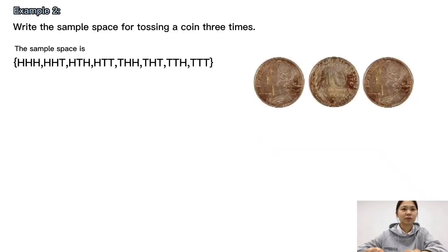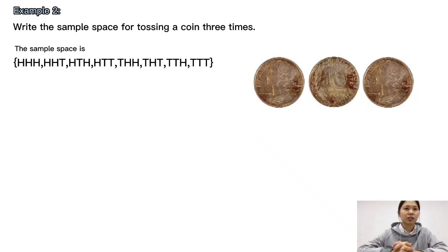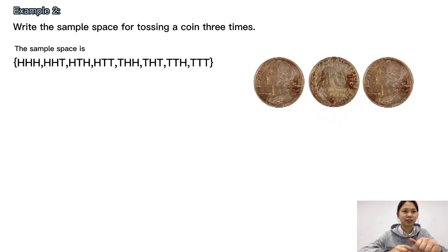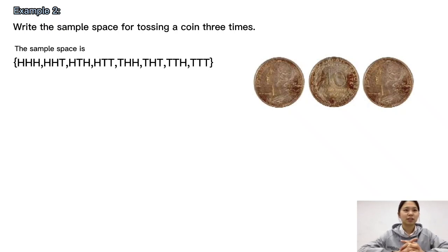Second example: Write the sample space for tossing a coin three times. The sample space is: {HHH, HHT, HTH, HTT, THH, THT, TTH, TTT}. The sample space contains this set of 8 outcomes.